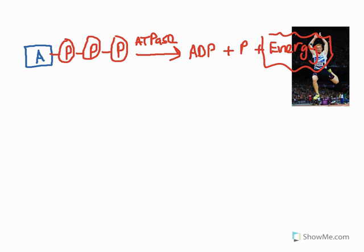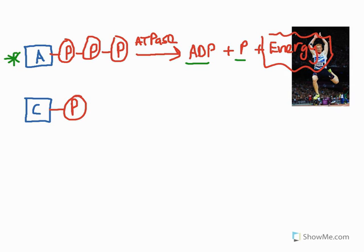Once that reaction has taken place, we've got a product we can no longer use — ADP plus P. We need to know what we do with that in order to re-synthesize ATP to use it once again. So essentially, what we do is store in our muscle cells, as well as other cells of the body, a product we refer to as creatine phosphate, or phosphocreatine.